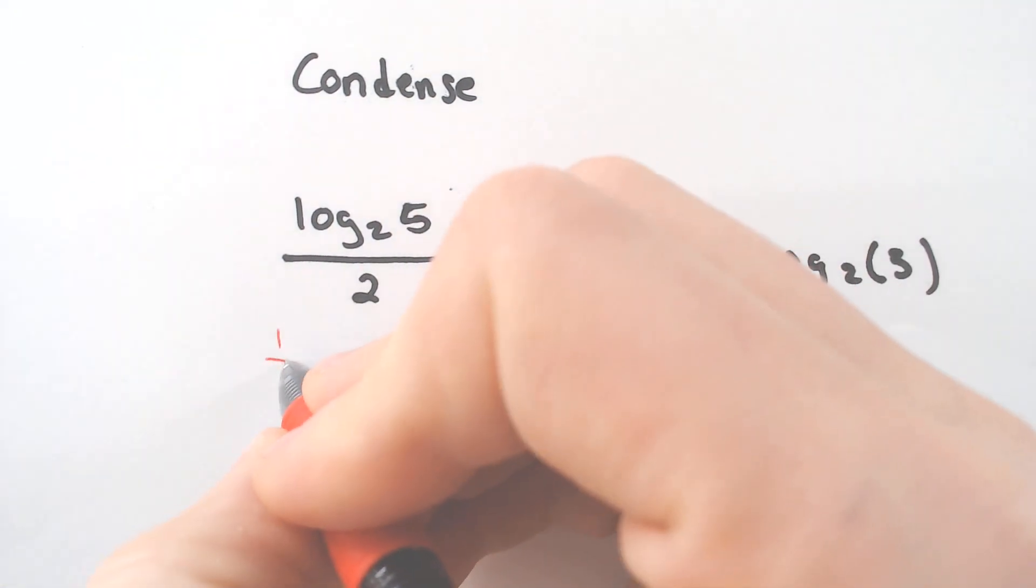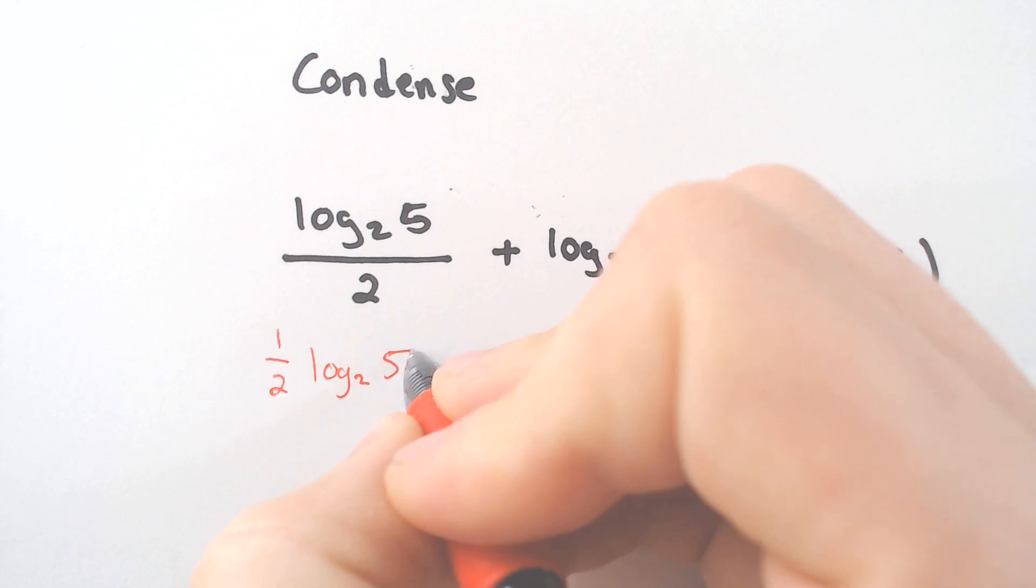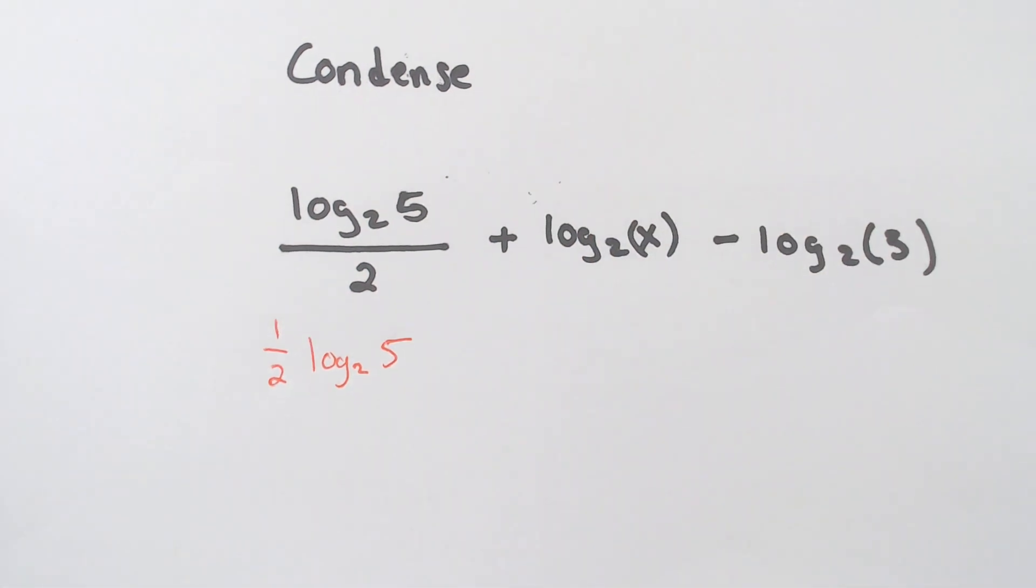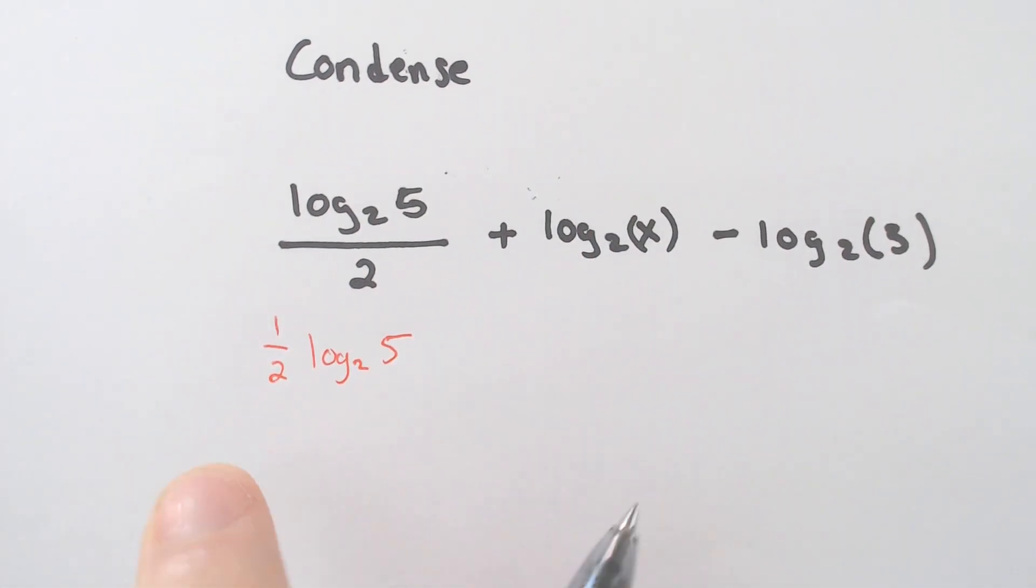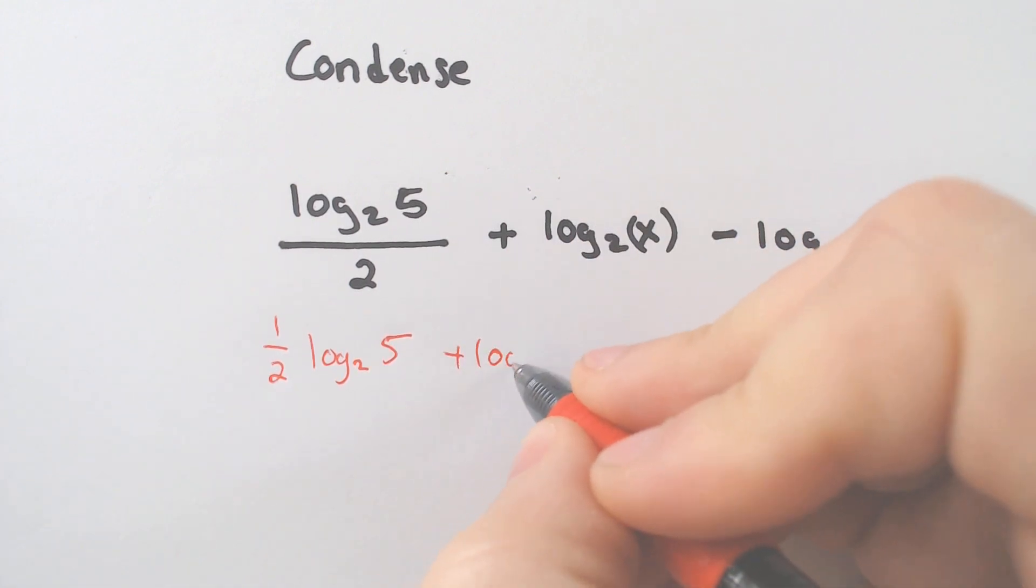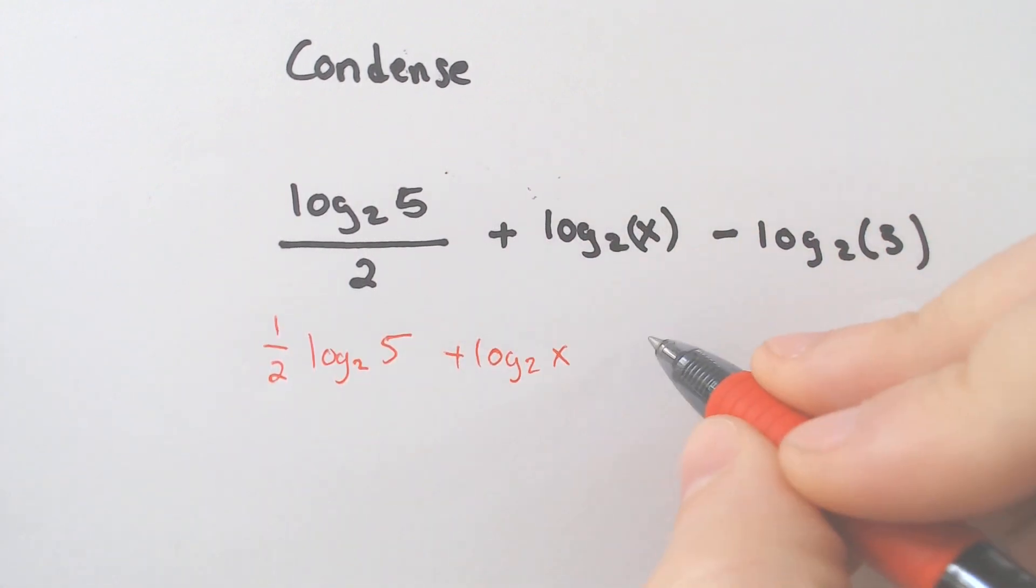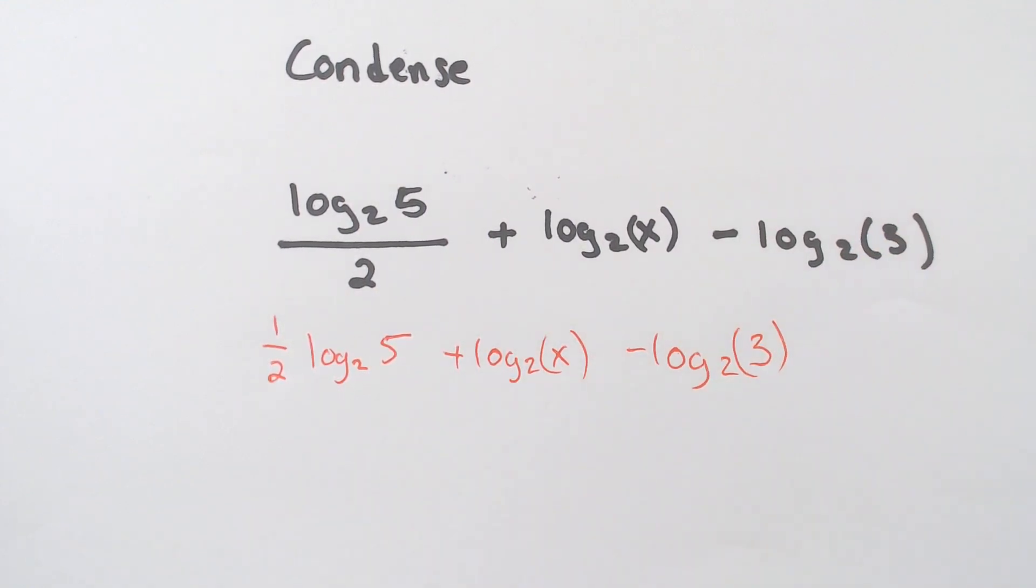It is a trick because that's really the same thing as saying one half of the log 2 of 5. So if you write it as the one half here, then you're far more likely to realize that this is going to be an exponent that I have to deal with.